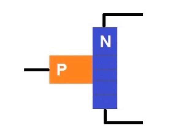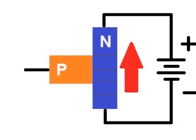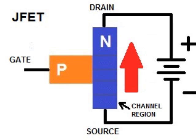Electrons flow through the N-type region of the P-N device from one terminal to the other, and the name of this N region is the channel. The channel input is called the source, and the channel output is called the drain. Electrons flow from source to drain. The P-type region of this device is called the gate.